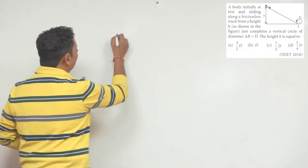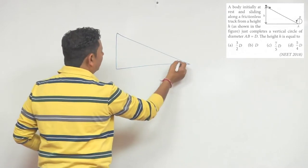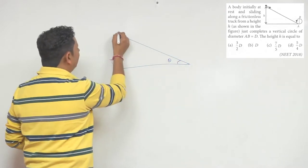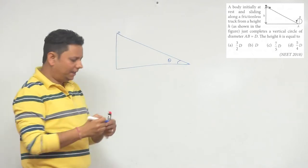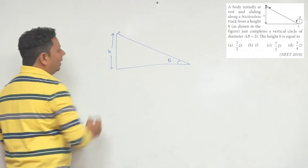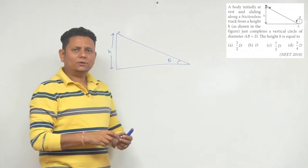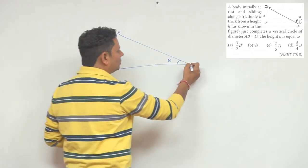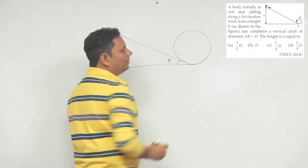The situation is that this is our inclined plane at angle theta. This is a particle here, and we need to find the height H as shown in this location, which is the bottommost point. Here it has a vertical circle to complete.